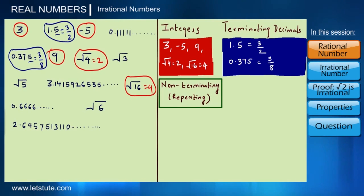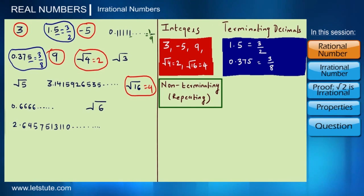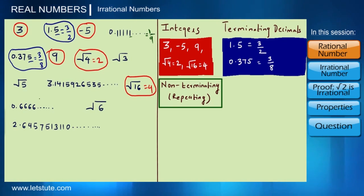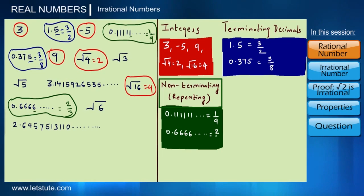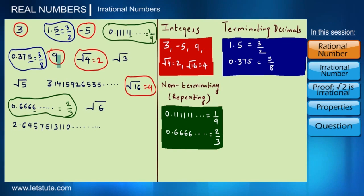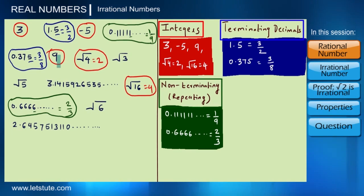Now if I talk about non-terminating repeating decimals, we can see that 0.11111 is non-terminating and repeating at digit 1. Similarly, 0.66666 is also non-terminating and repeating at digit 6. So 0.1111 and 0.6666 are called non-terminating repeating decimals.